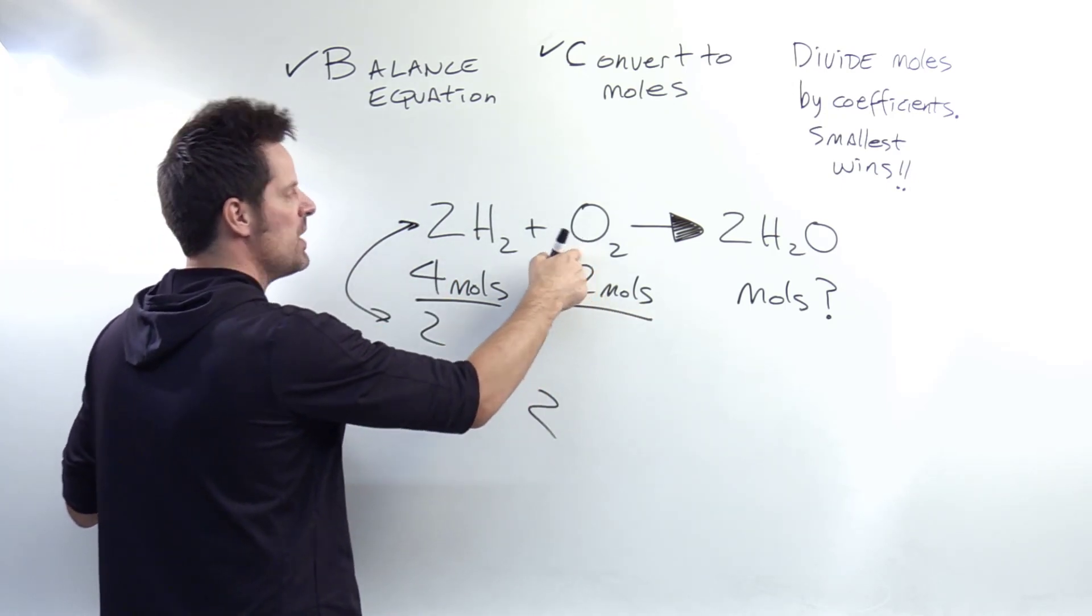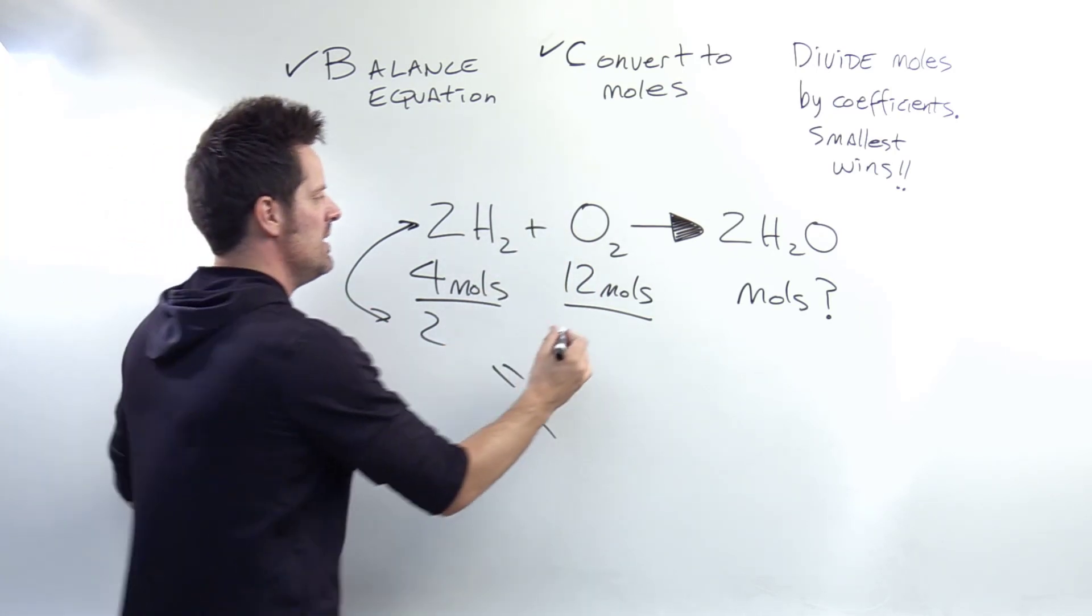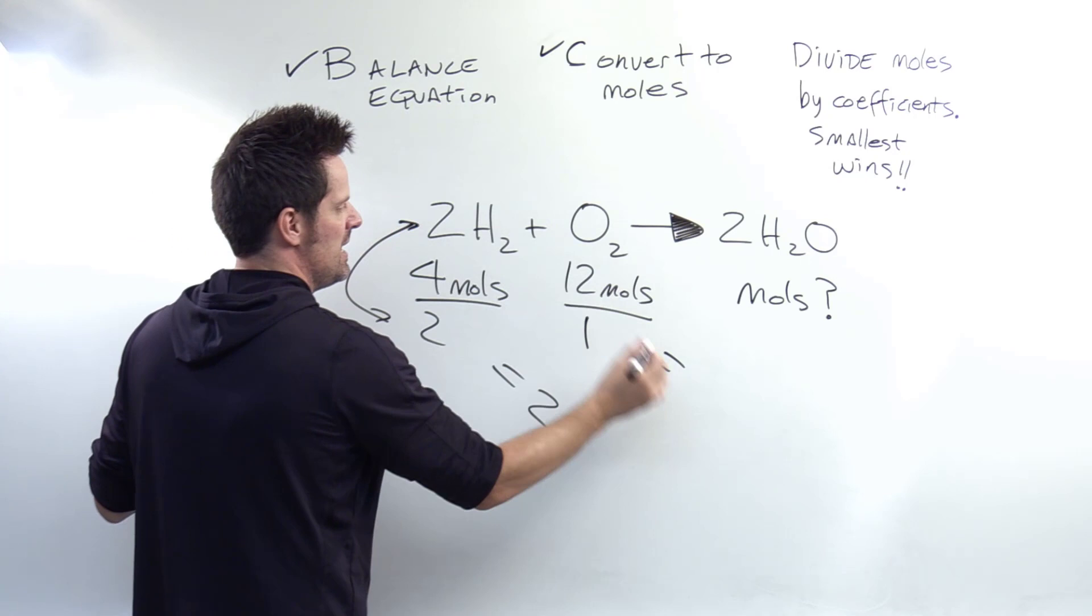Here I've got 12 moles of O2. What coefficient is right here? There's no coefficient written, so it's an understood one. So I take 12 and divide it by one, and that gives me 12.